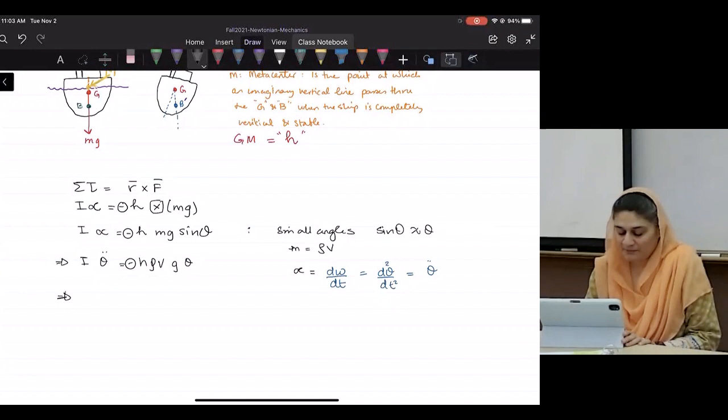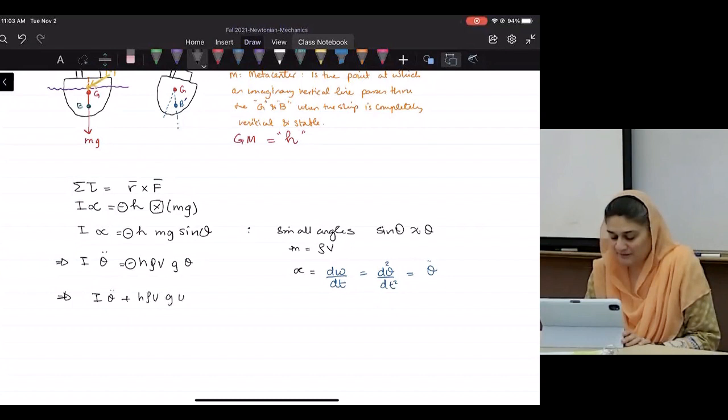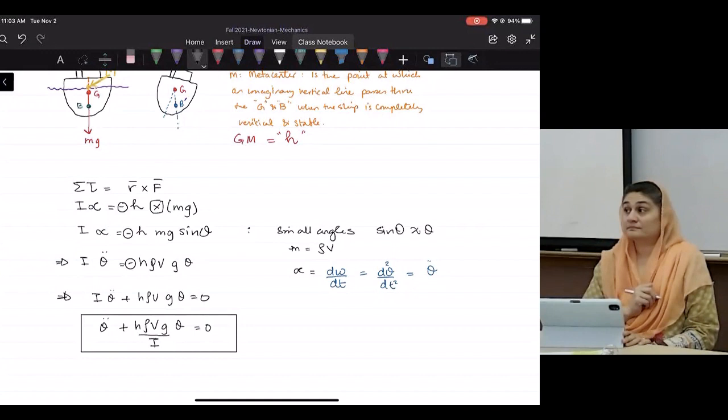Or may I write this as I theta double dot plus H rho V G theta equals zero? Or theta double dot plus H rho V G theta divided by moment of inertia equals zero?